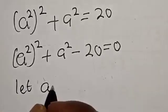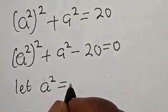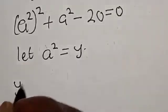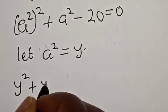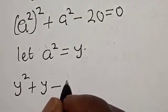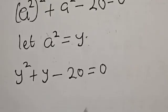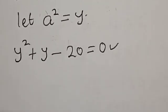Let a square is equal to y. Now, y square plus y minus 20 is equal to 0. This is a quadratic equation which can be solved by using factorization method.